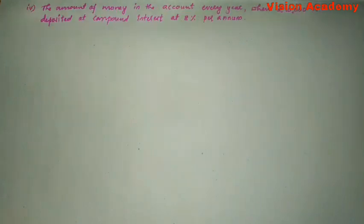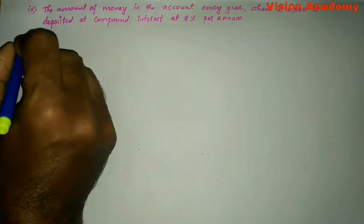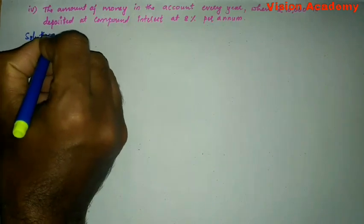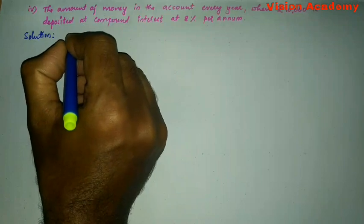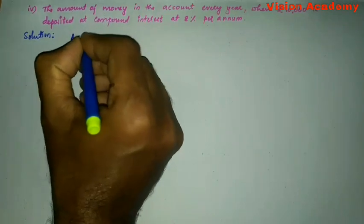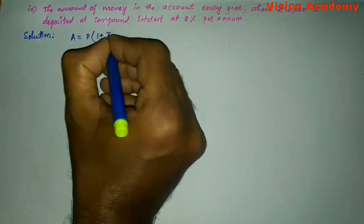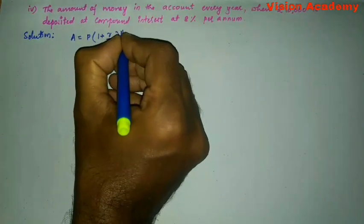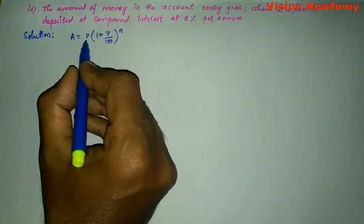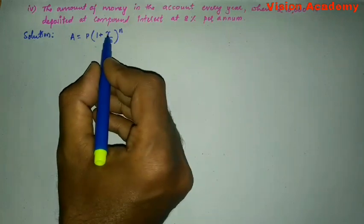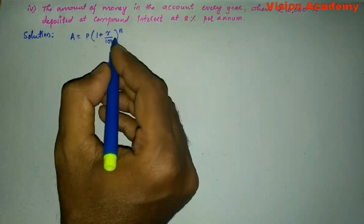Now let us see question number four: The amount of money in the account every year when Rs. 10,000 is deposited at compound interest at 8% per annum. The formula to find the compound interest is: Amount A equals principal P into 1 plus rate of interest divided by 100, to the power n, where n represents the number of years. Here A is amount, P is principal, R is rate of interest, and N is number of years.